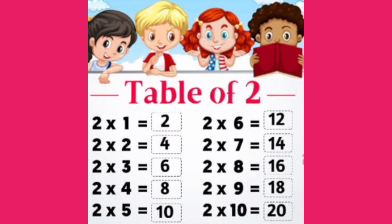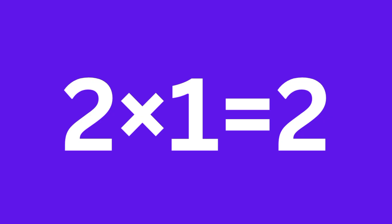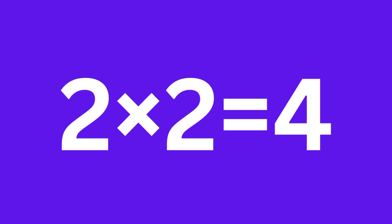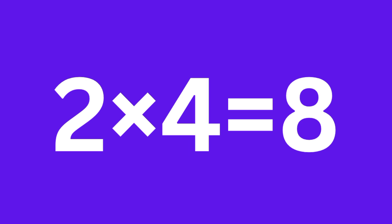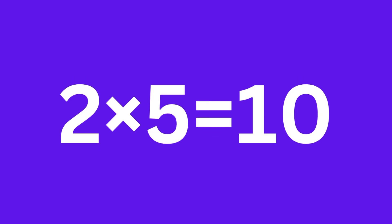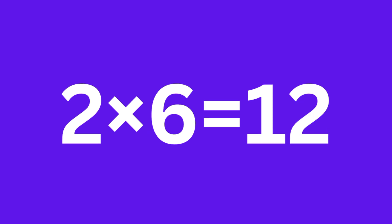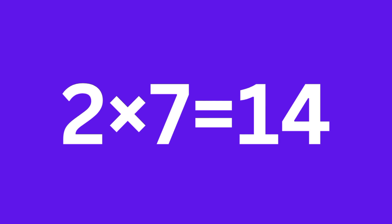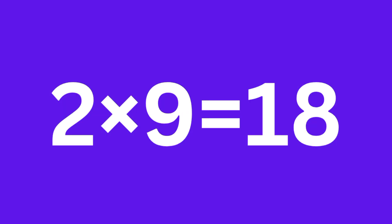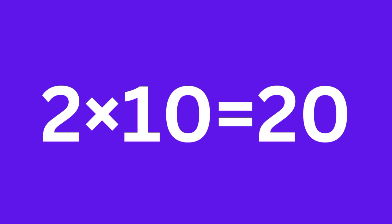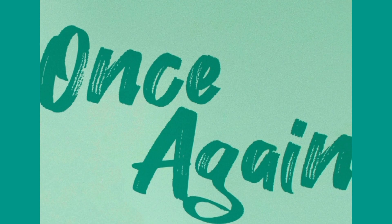Table of 2. 2 ones are 2. 2 twos are 4. 2 threes are 6. 2 fours are 8. 2 fives are 10. 2 sixes are 12. 2 sevens are 14. 2 eights are 16. 2 nines are 18. 2 tens are 20. So once again.